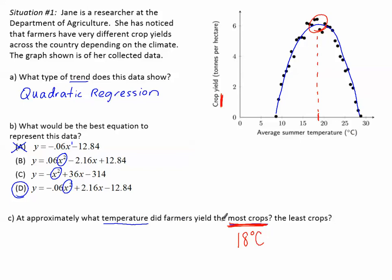At what temperature did farmers yield the least crops? So again, looking at the crops, we're looking for the lowest numbers. About here, also about here. So that's around 8 and 28. So 8 degrees Celsius and 28 degrees Celsius. And remember, that's just approximately. That means we're estimating. It's not going to be exact.